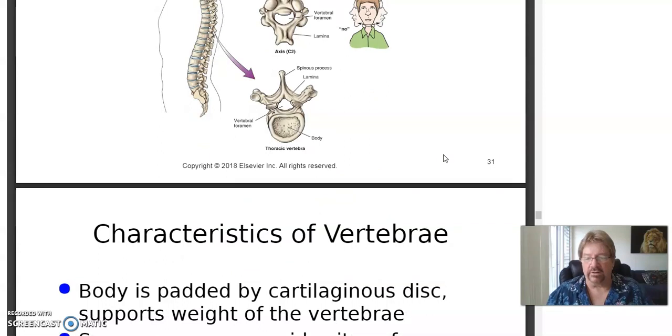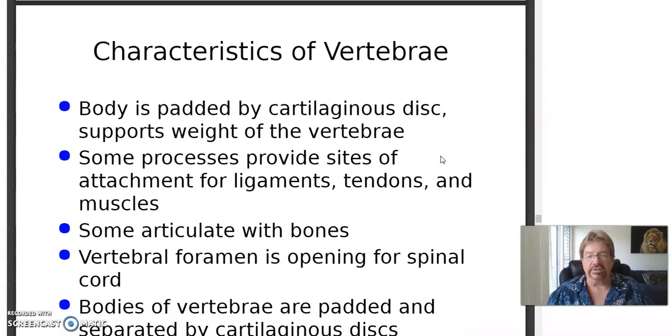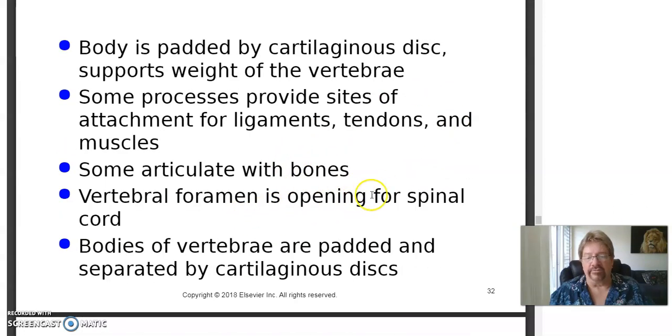If you're thinking it's complicated, you're right. It's really complicated. Characteristics of vertebra: body is supported by cartilaginous disc, the intervertebral disc supports weight of the vertebra. Some processes provide sites of attachment for ligaments, tendons, and muscles. It's really complex with that too. There are a bunch of little small ligaments and big ligaments and tiny little muscles and big muscles. To say it's complex is really an understatement. Some articulate with bones. Vertebral foramen is opening for the spinal cord. It's blocks with holes in them stacked on top of each other. Bodies of vertebra padded and separated by cartilaginous discs, called IVDs, intervertebral discs.